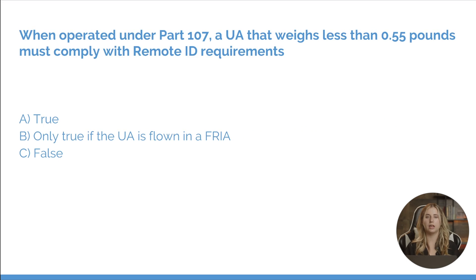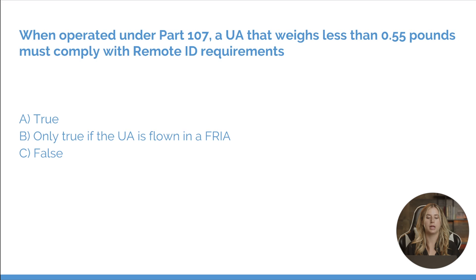When operated under Part 107, an unmanned aircraft that weighs less than 0.55 pounds must comply with remote ID requirements. A, true. B, only true if the unmanned aircraft is flown in that restricted area. Or C, false. Our answer here is A, true, because we are operating that unmanned aircraft under Part 107 regulations.